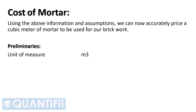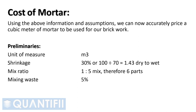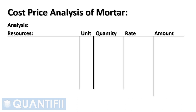Preliminaries: unit of measure is per cubic meter. Shrinkage at 30%, or 100 divided by 70, equals 1.43 dry to wet. Mix ratio at 1 to 5, therefore a total of 6 parts. Mixing waste at 5%. To perform a cost analysis for the cost of mortar, you will need columns for your resources, the resource unit of measure, the quantity required, the resource rate, and the amount.